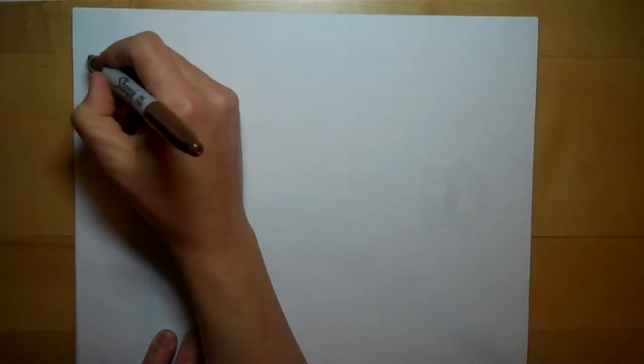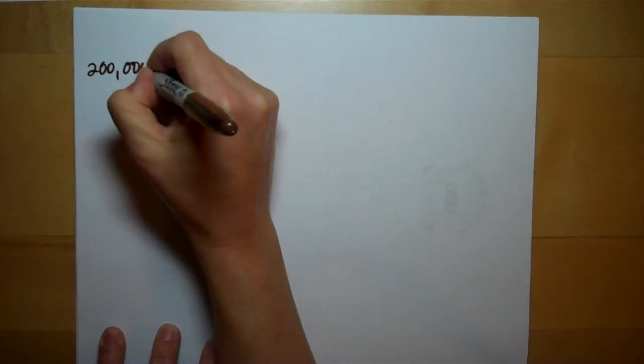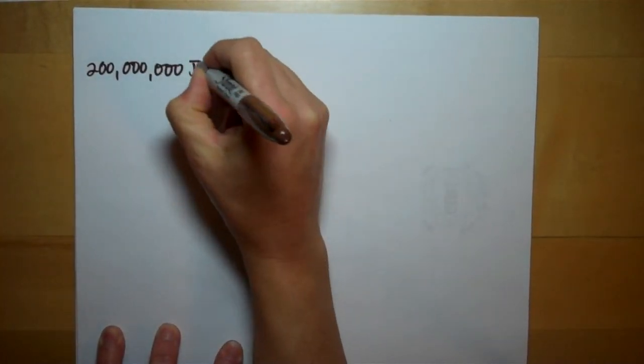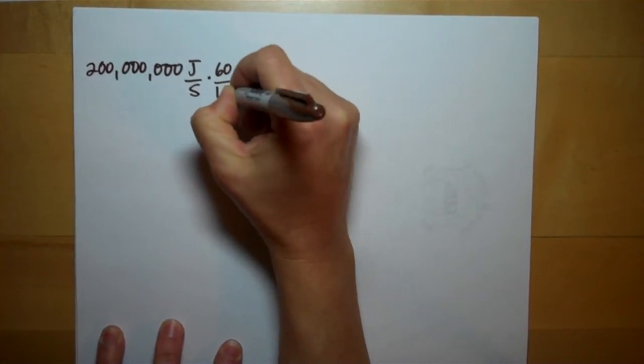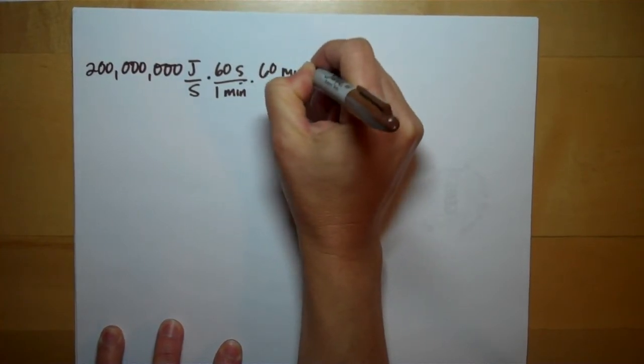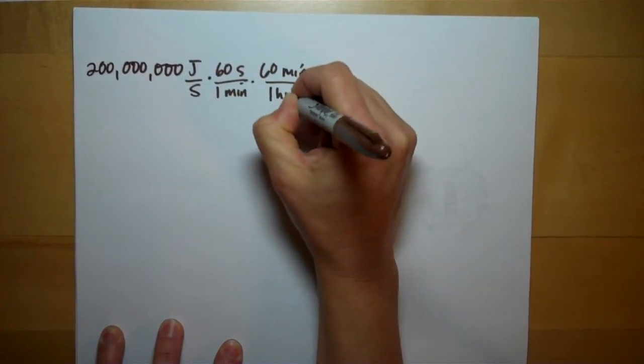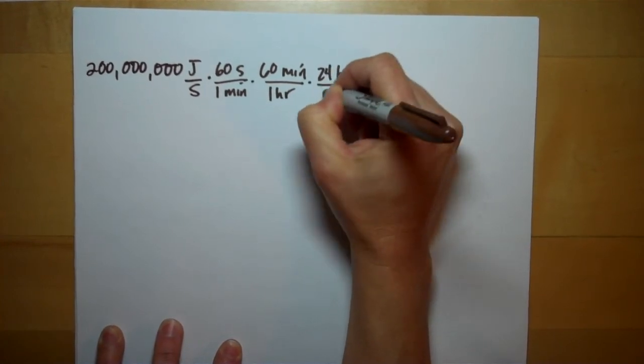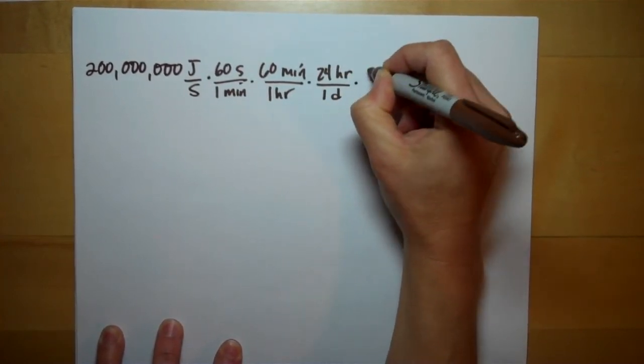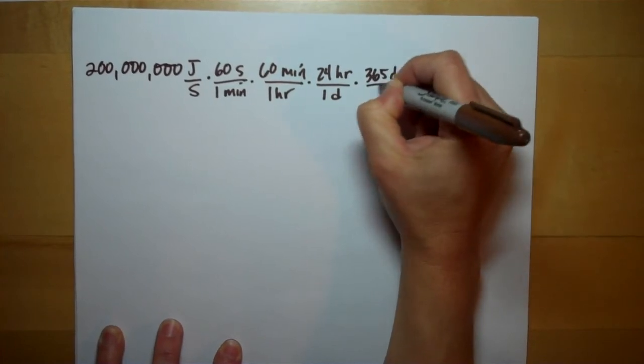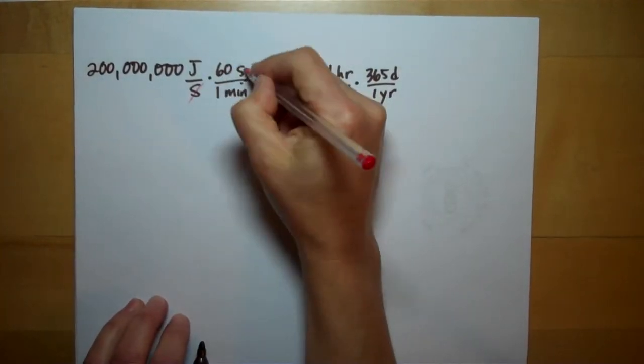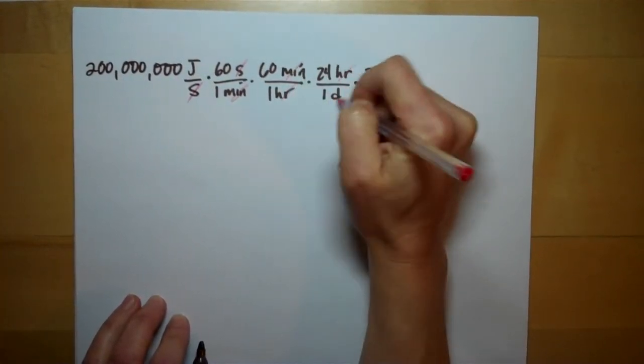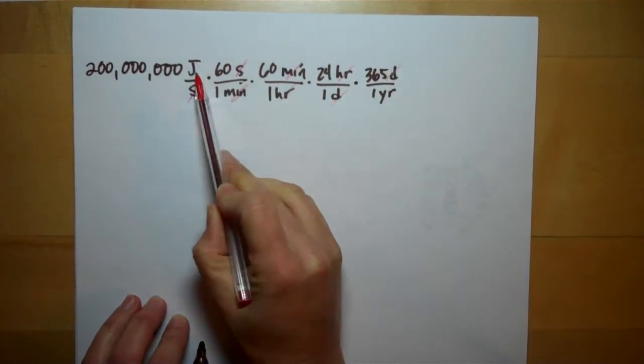So we've got 200 million joules of energy coming in per second. And we have to do the same conversion. There's 60 seconds in a minute, 60 minutes in an hour, 24 hours in a day, 365 days in a year. If you canceled all these units, seconds would cancel out, minutes would cancel out, hours would cancel out, days would cancel out. You'd be at joules per year.